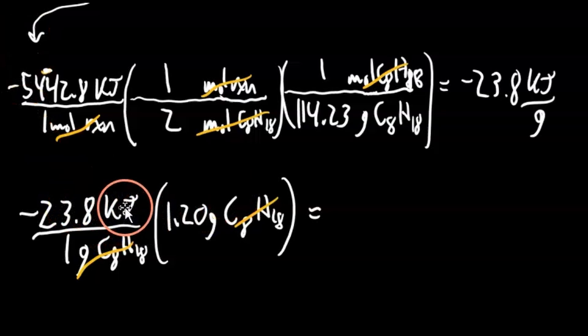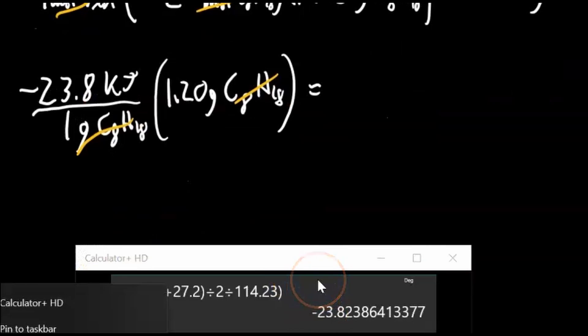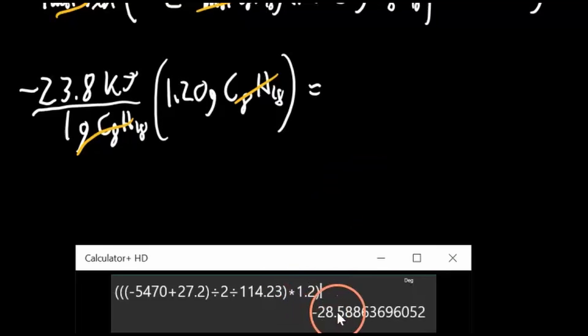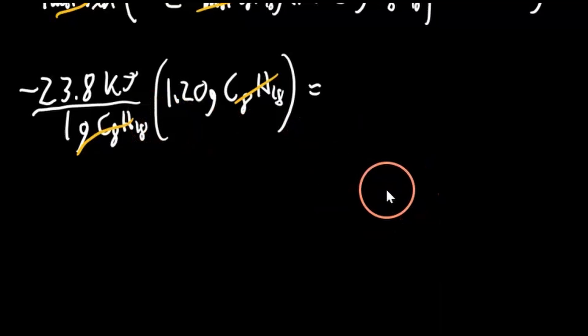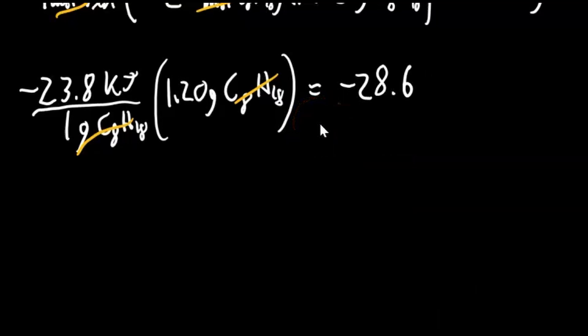That's how many kilojoules are released for this many grams. We've still got the number there, so times 1.2 is negative 28.6, because we have three sig figs. So negative 28.6 kilojoules released for every 1.2 grams of octane.